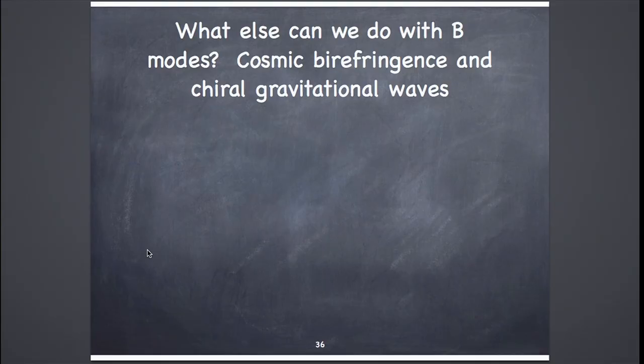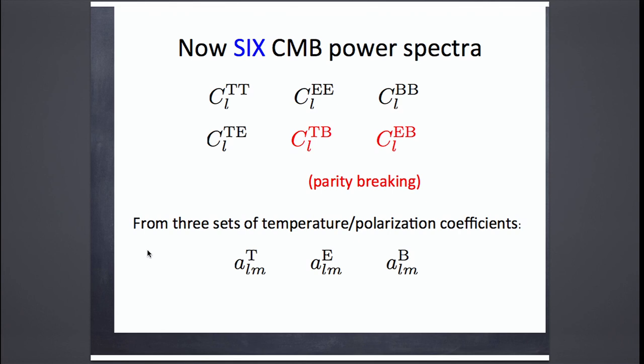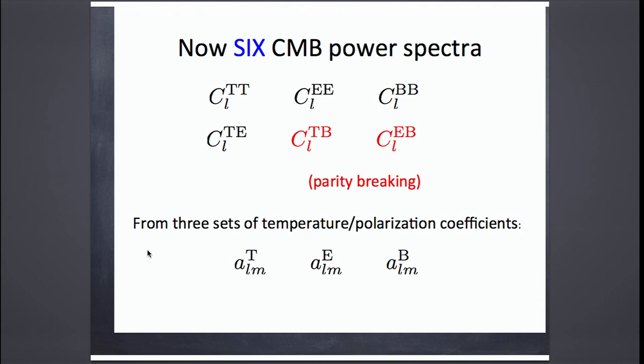What else can we do with B modes? There's cosmic birefringence and chiral gravitational waves. E modes and B modes have opposite handedness — rotating an E-mode pattern by 45 degrees turns it entirely into a B-mode pattern. If I measure temperature and polarization, I have six power spectra: TT, EE, BB, TE, and the parity-odd TB and EB. Since T and B have opposite parity, a non-zero TB cross-correlation implies parity breaking. Similarly, a statistically significant non-zero EB cross-correlation implies parity breaking.